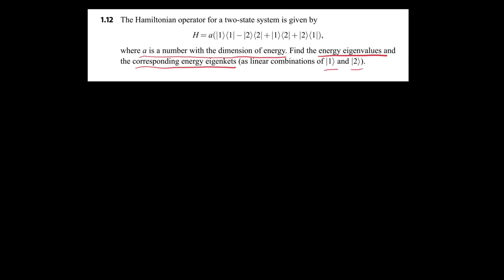This question says that the Hamiltonian operator for a two-state system is given by H = a times (|1⟩⟨1| − |2⟩⟨2| + |1⟩⟨2| + |2⟩⟨1|), where a is a number with a dimension of energy. We have to find the energy eigenvalues and the corresponding energy eigenkets as linear combinations of |1⟩ and |2⟩.